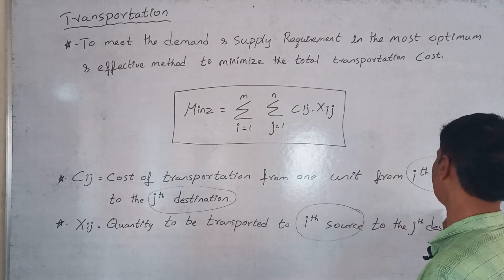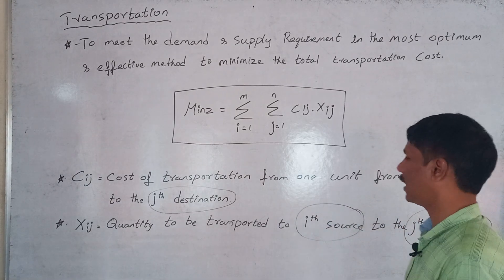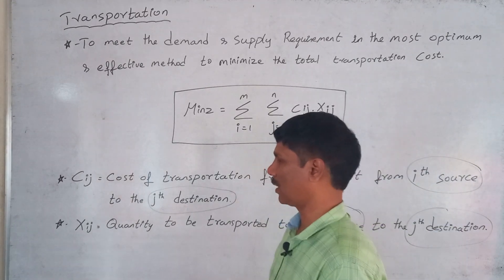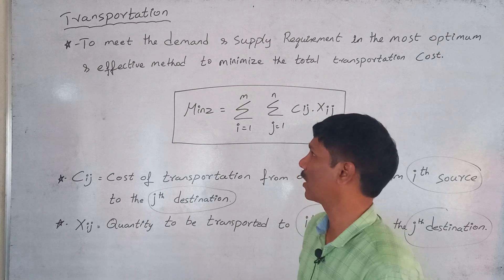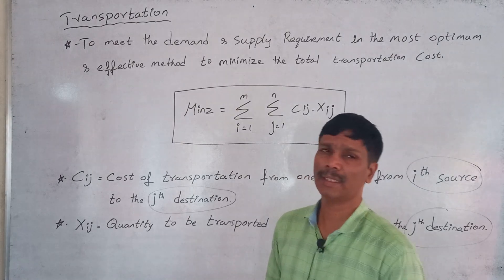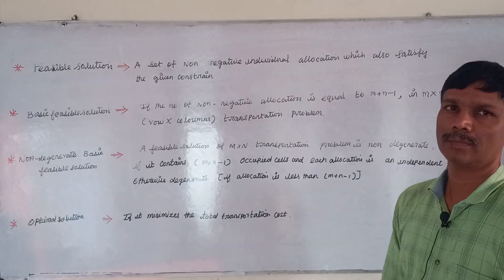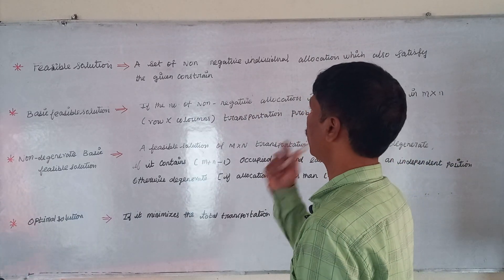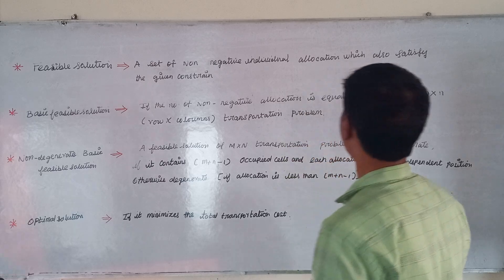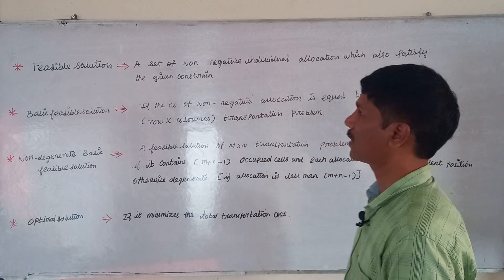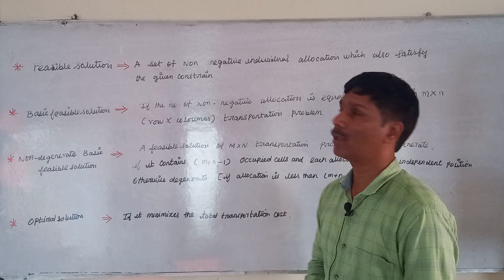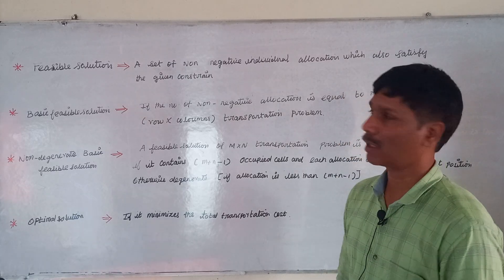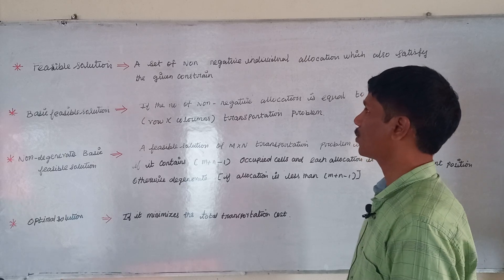Here, cij is the cost from the i-th source to the j-th destination, and xij is the quantity to be transported. We seek a set of non-negative individual allocations which satisfy the given constraints — this is called a feasible solution, specifically the basic feasible solution.